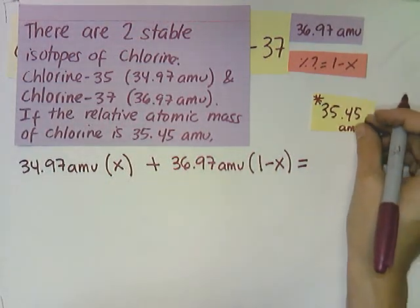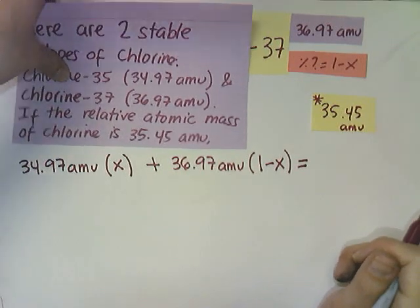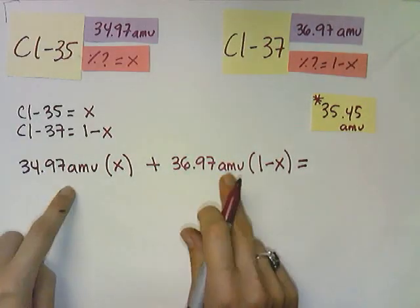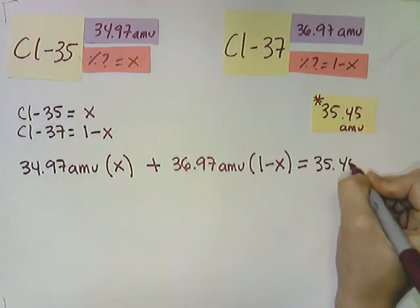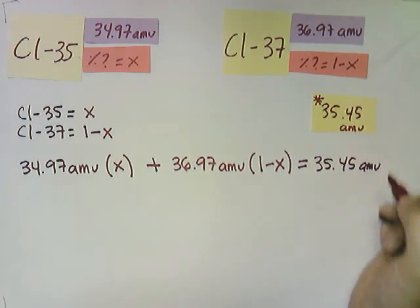Let's do that right now. We have the relative atomic mass, which is the average weight of chlorine, 35.45 AMUs. So this is very important because this would be like the number that's given in the periodic table. So both of these will have to be equal to 35.45 AMUs.